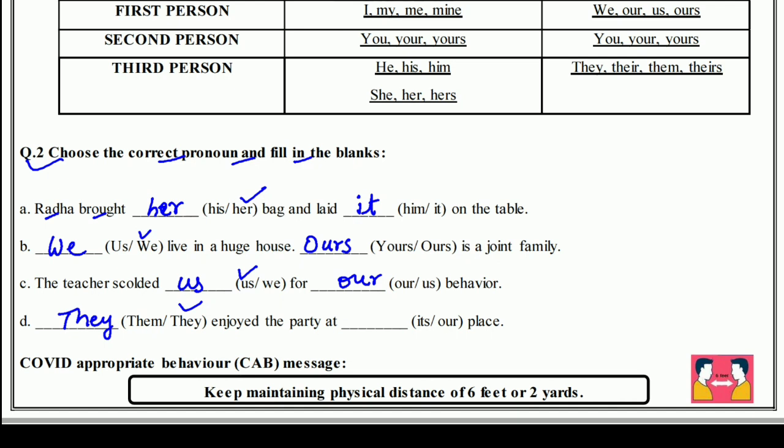They enjoyed the party at our place — उन्होंने हमारी जगह पर party enjoy की। इस तरह से हमें इसको लिखना है।